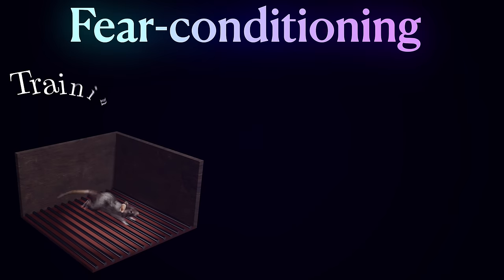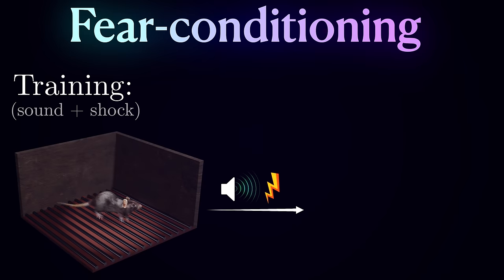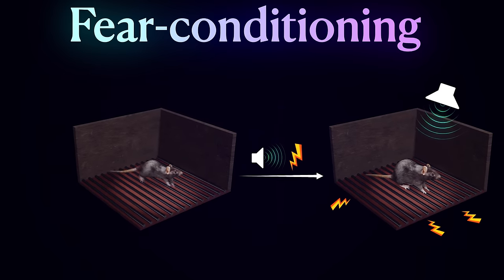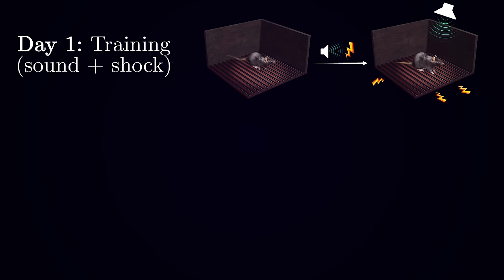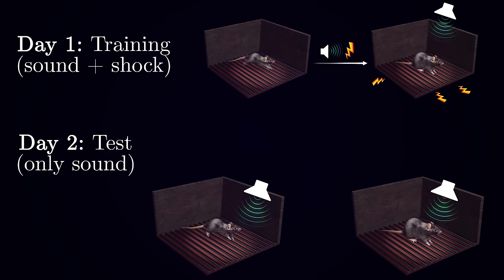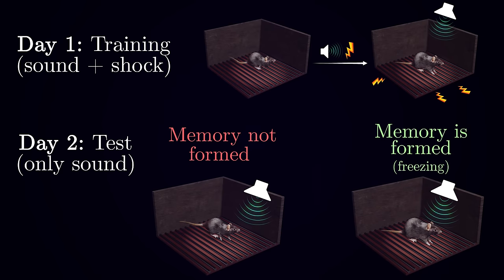During training, the sound cue and the shock are presented either simultaneously or with a short delay, and the animal learns to associate previously neutral stimulus with pain. The effects of such conditioning are usually tested on the next day, when the mouse is presented with the same conditional stimulus. If the mouse freezes in response to it, and freezing is a type of a defense mechanism, it means that the associative memory was successfully formed, since the animal could retrieve that this sound leads to pain.